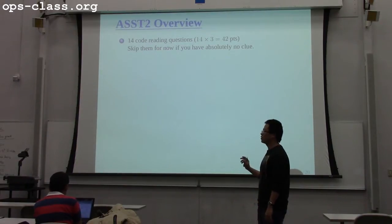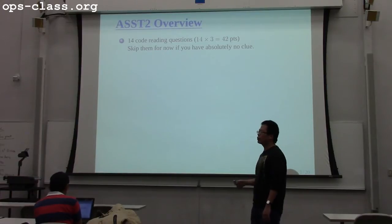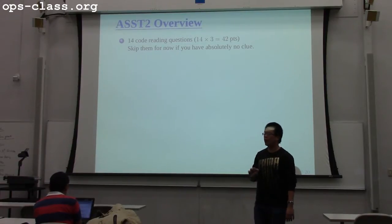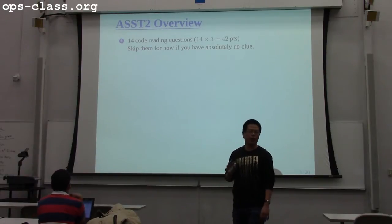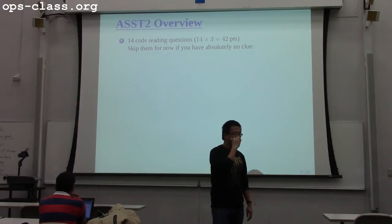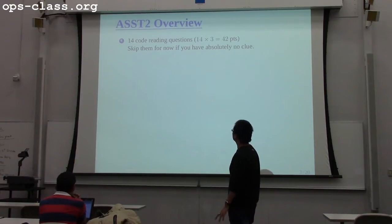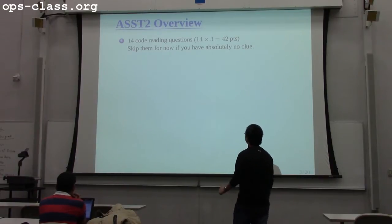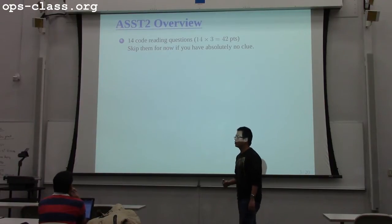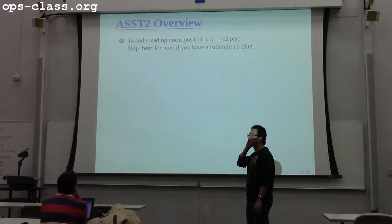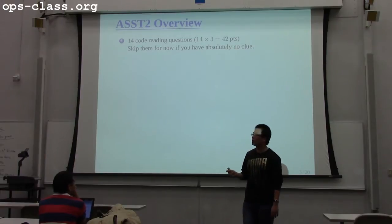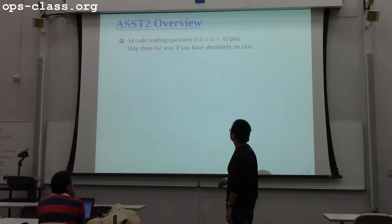I would suggest don't try to wrap up assignment one by the end of today. If you are still not going to make it work, forget about it and try to get started on assignment two. For assignment two, we have, as usual, 14 code reading questions. I would suggest you skip some of them — you may have no idea what the program is about, so you can safely skip those.